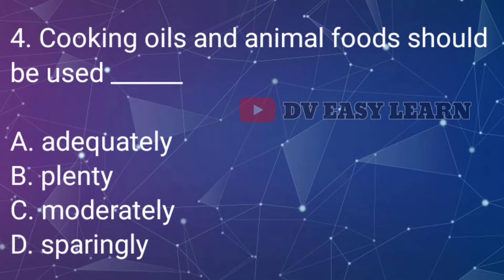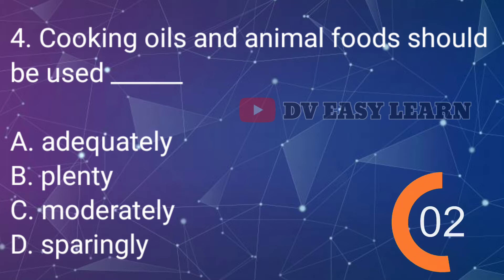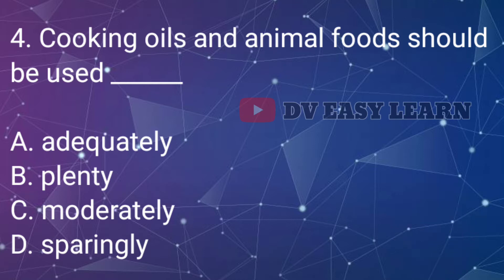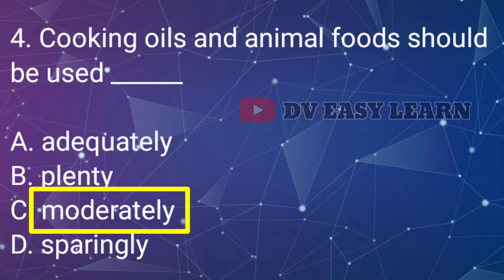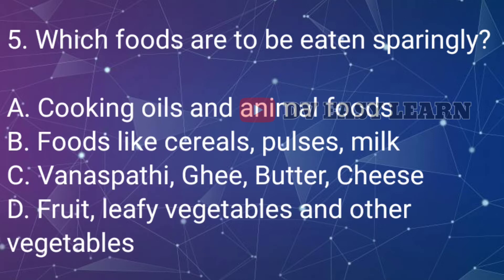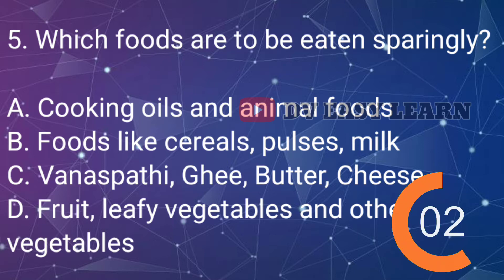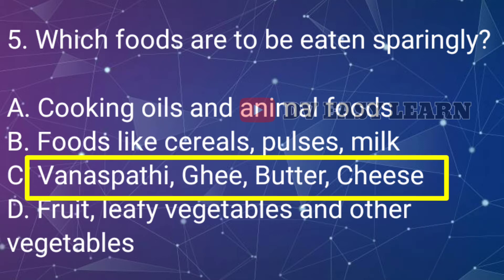Question No. 4: Cooking oils and animal foods should be used — Correct answer: Moderately. Question No. 5: Which foods are to be eaten sparingly — Correct answer: Vanaspati, ghee, butter, cheese.